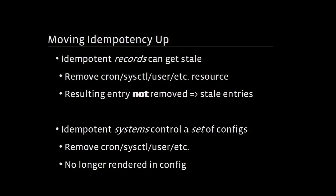Every configuration management system I know tends to deal with records. You have a resource for a cron job, a resource for a user — those manage a record. So if you add a cron resource in one of your cookbooks, push it out, and then a month later decide you don't need that cron job and delete those lines from your cookbook, nothing happens. New systems will come up without it, but your cron job doesn't go away. Now you have this stale cron job everywhere.